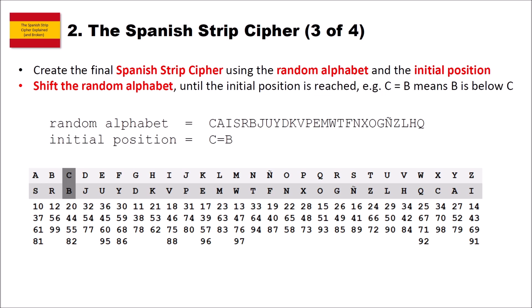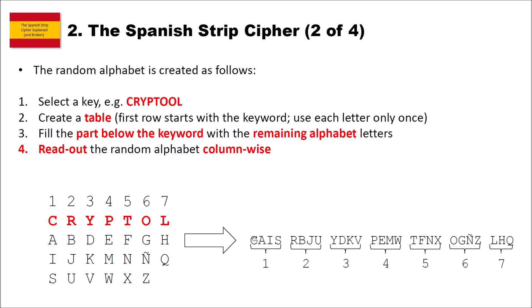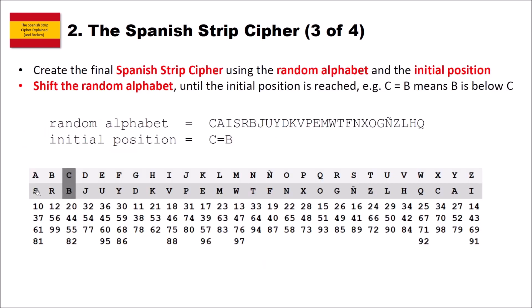Now let's create the final Spanish Strip Cipher using the previously created random alphabet and the initial position. We shift the random alphabet until the initial position is reached. That means when our initial position is c equals b, b is placed below c. The random alphabet originally started with a C, but now we have the S here because we shifted the alphabet to the right until the B in the random alphabet is below the C in the ordered alphabet. The remaining letters wrap around, giving us the final shifted cipher table.